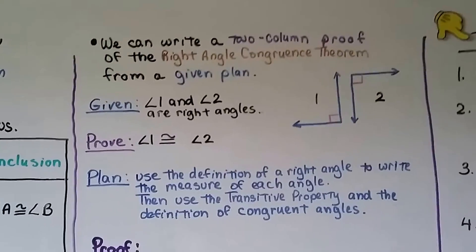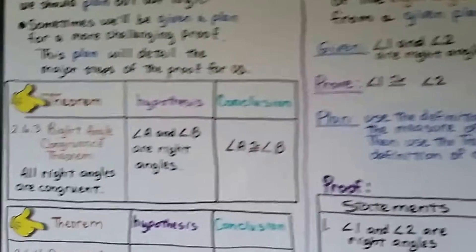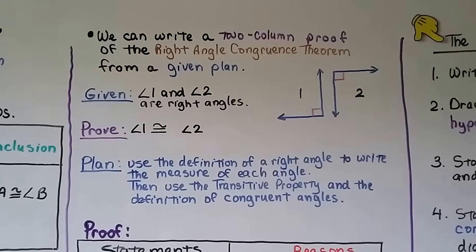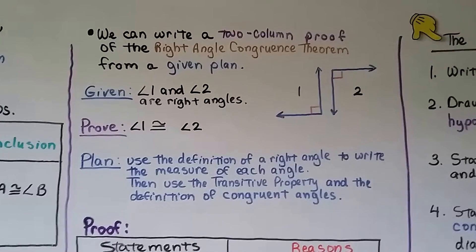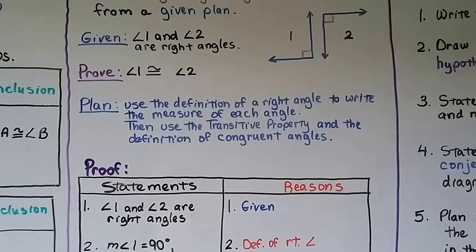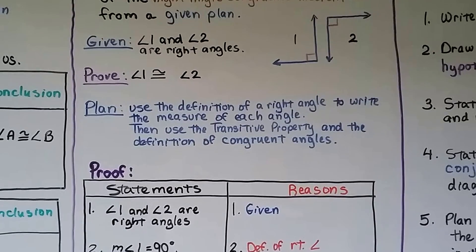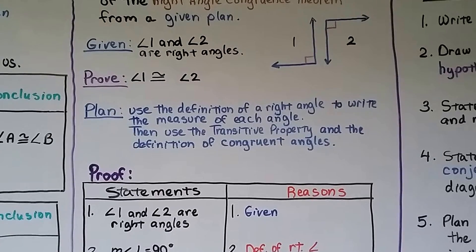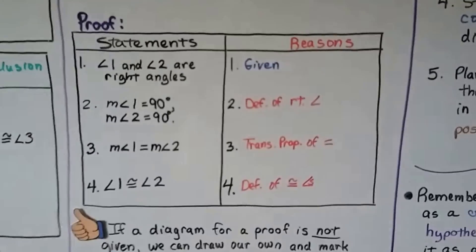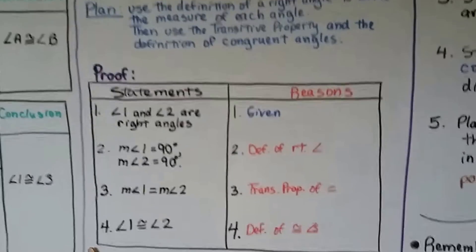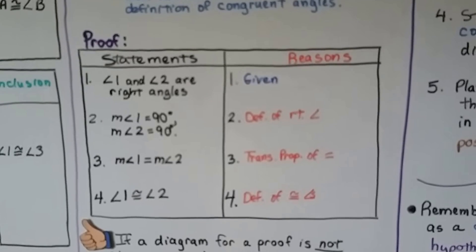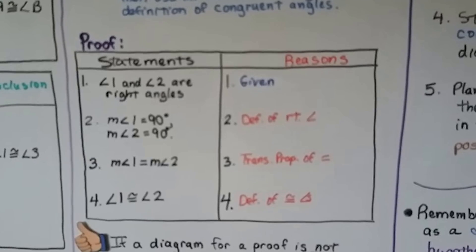We can write a two-column proof of the Right Angle Congruence Theorem from a given plan. Remember, it says all right angles are congruent. We have a drawing with two right angles, angle 1 and angle 2, and our given is that angle 1 and angle 2 are right angles. We need to prove that angle 1 is congruent to angle 2. The plan: use the definition of a right angle to write the measure of each angle, then use the transitive property and the definition of congruent angles. The transitive property says if A equals B and B equals C, then A equals C. Our first statement is angle 1 and angle 2 are right angles — from our given. Our second statement is the measure of angle 1 equals 90 degrees and the measure of angle 2 equals 90 degrees — that's the definition of a right angle.